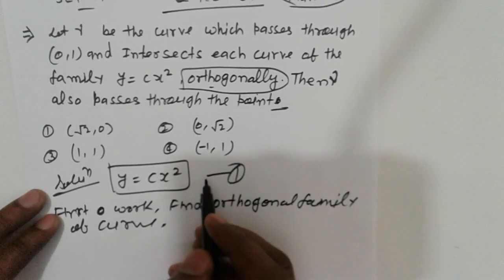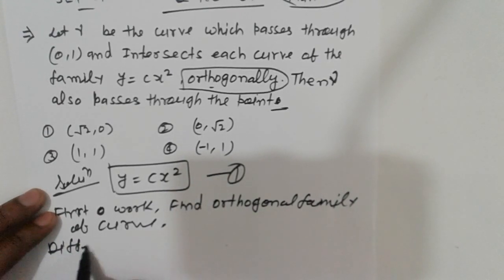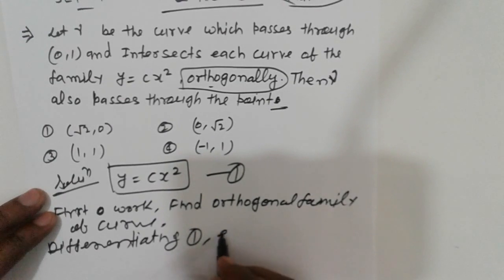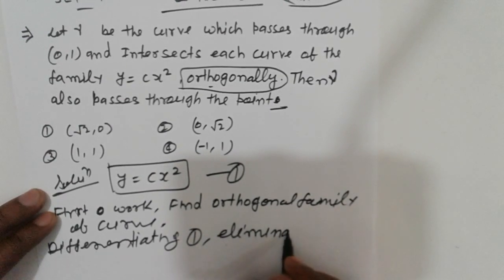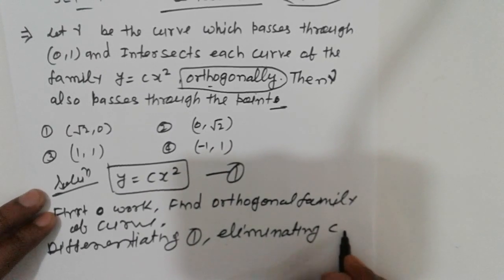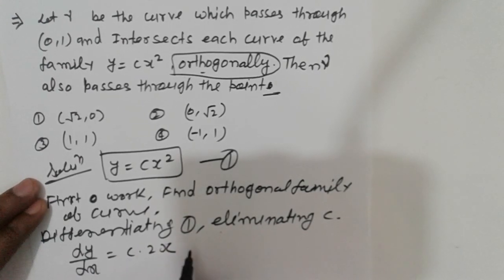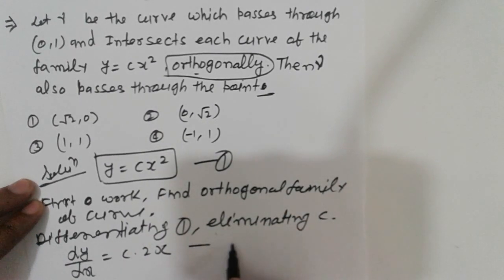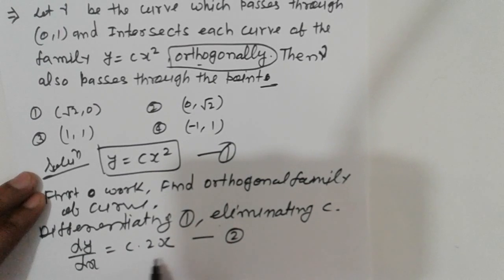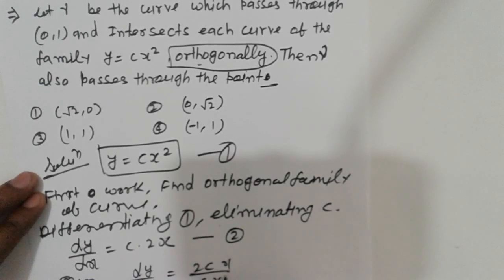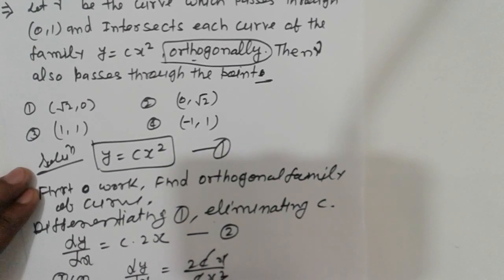First step: differentiate equation one and eliminate c. Differentiating equation one and eliminating c, we get dy/dx = c into 2x. This is equation number 2. Dividing equation 2 by equation 1, we get dy/dx = 2cx upon cx².